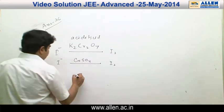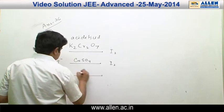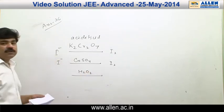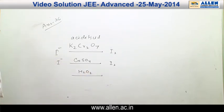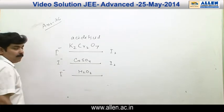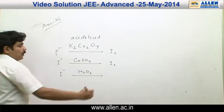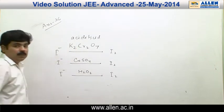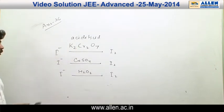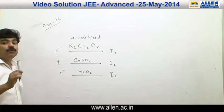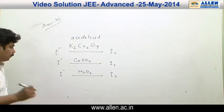Another reagent is S₂O₂. In S₂O₂, the oxidation state of oxygen is −1, and when S₂O₂ reacts with I⁻, it converts I⁻ into I₂ and the oxidation state of oxygen goes from −1 to −2.